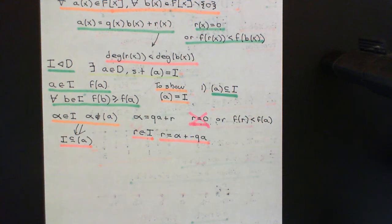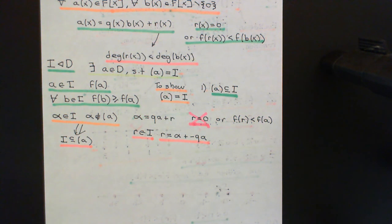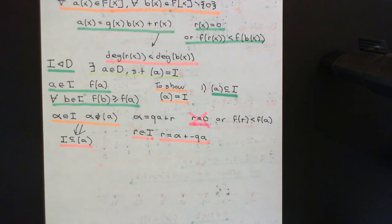So what we've now succeeded in doing is showing that if you have any ideal within your Euclidean domain, either it will be the zero ideal — which is a principal ideal — or it will be a principal ideal generated by the element in it that has the smallest Euclidean size. Note that you could have multiple elements with that smallest Euclidean size, and they'd all successfully generate the same ideal. In the next video, we'll talk about greatest common divisors in a Euclidean domain and the Euclidean algorithm.